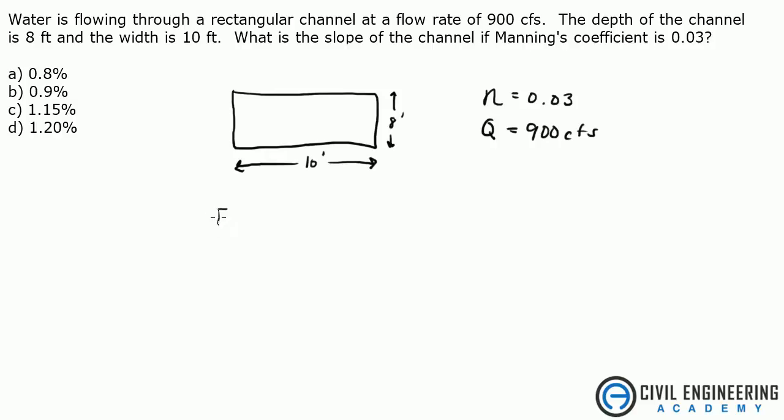I'm going to be pulling this from equation 19.13 in the edition that I'm using, which basically states that your flow rate is equal to 1.49 divided by Manning's coefficient times the area times R, which is the hydraulic radius, raised to the 2/3rds, times the square root of the slope.